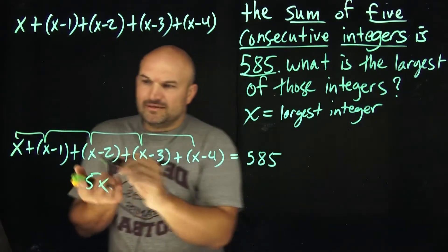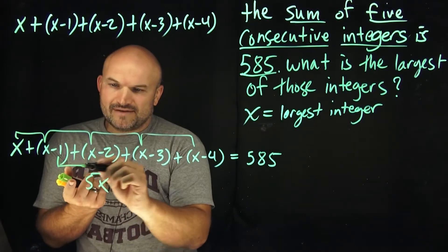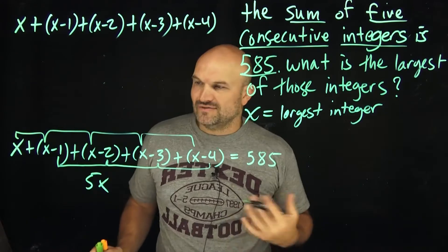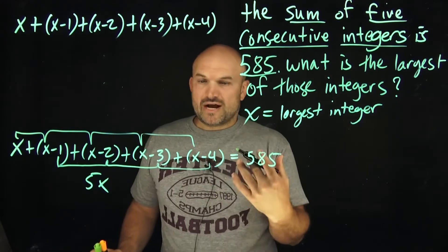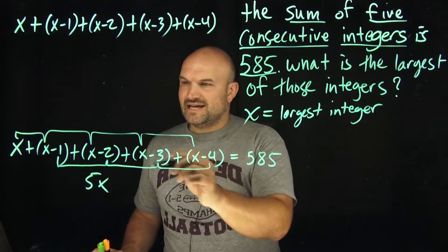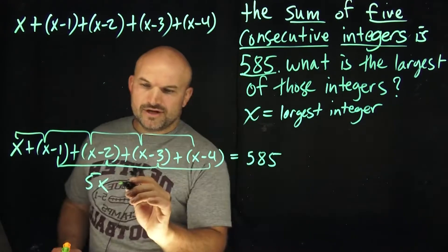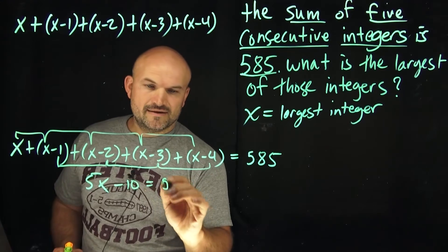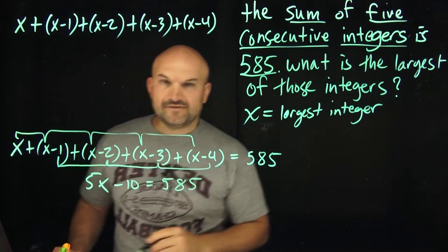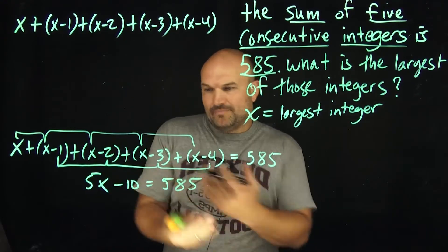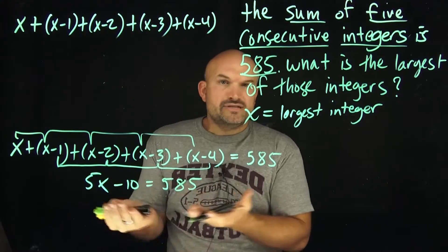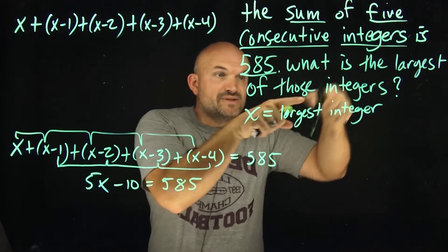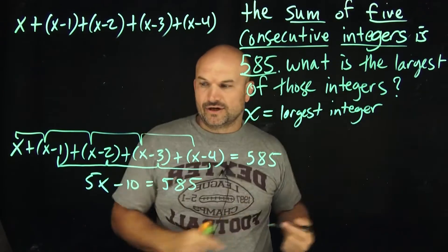I'm also going to combine my numbers. I have one, two, three, and four — they're all negatives because we're subtracting them, so that's minus 10. So the equation becomes 5x minus 10 equals 585. I have a two-step equation, and we're trying to solve for x, which represents our largest integer.